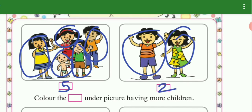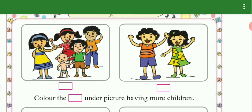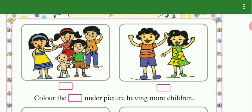Color the box under the picture having more children. So here we have number 5 and 2. More children — how many children are there? This is 4. This is 2. This is more. So this is more. We have number 5.